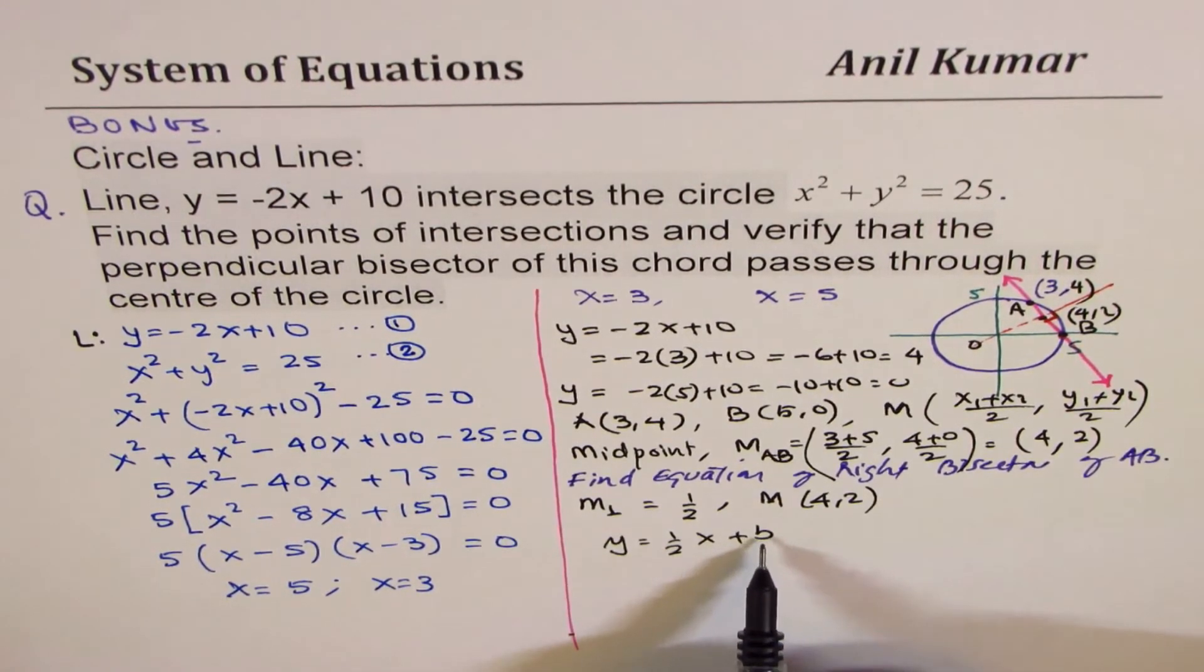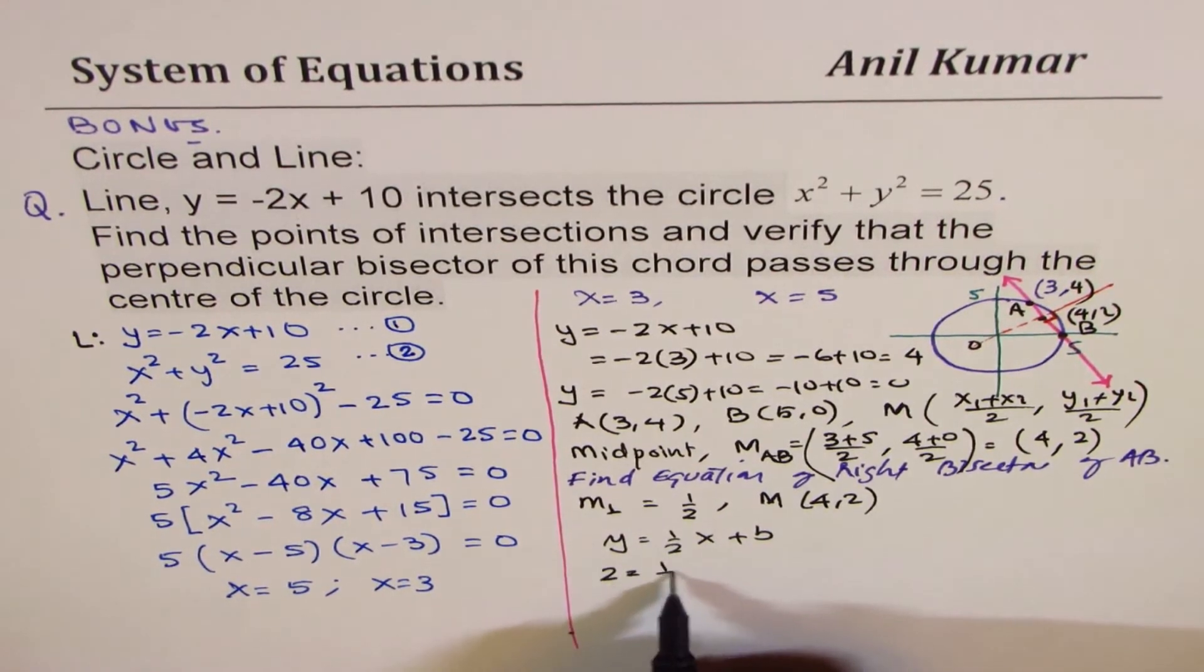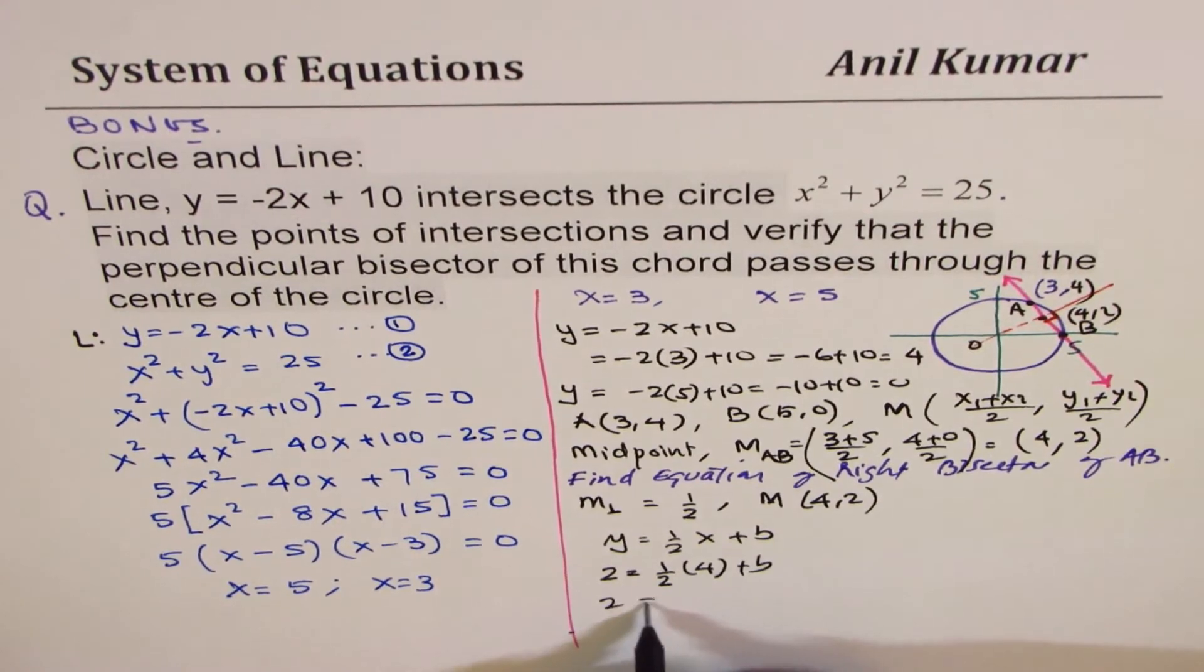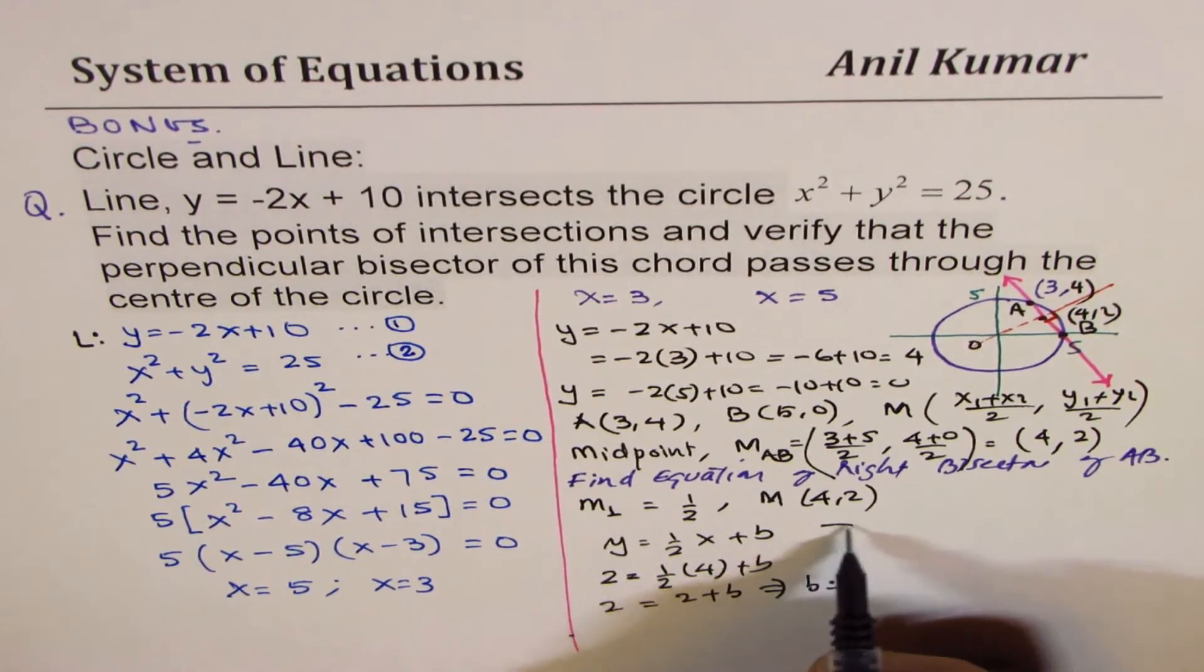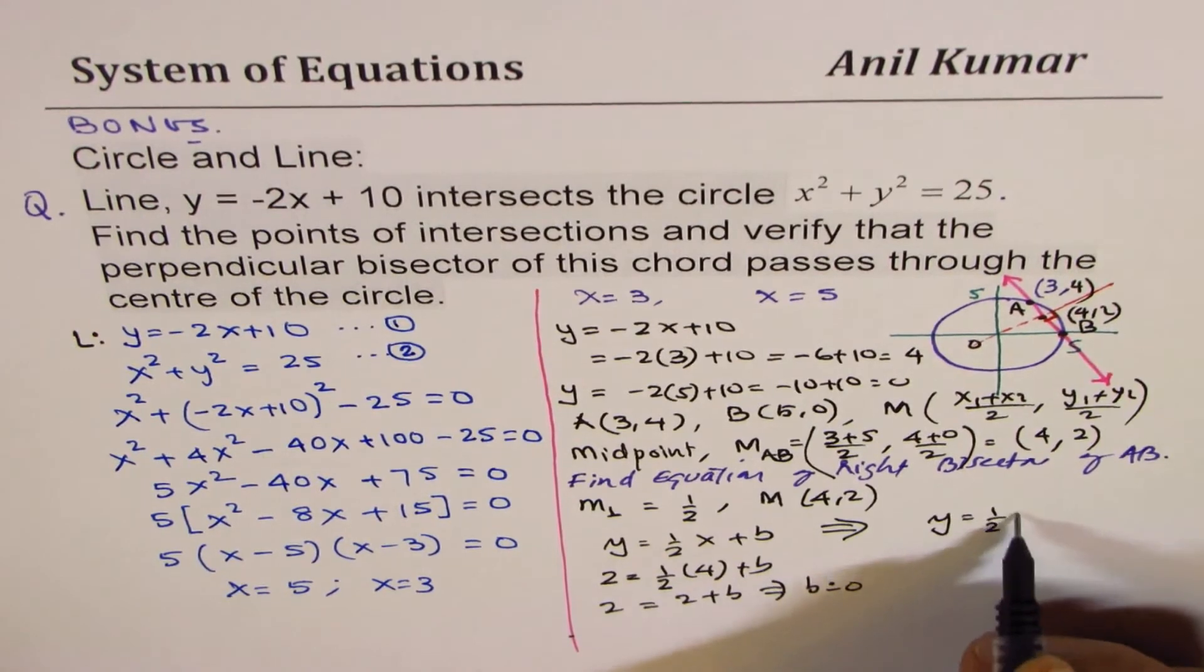So the equation will be y equals half x plus b. To find the value of b, I'll substitute 4 and 2: 4 for x, 2 for y. So 2 equals half times 4 plus b, and that is 2 equals 2 plus b, and that gives us b equals 0. Since b is 0, the equation will be y equals half x.